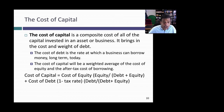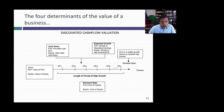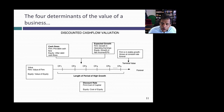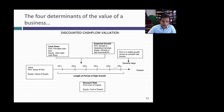The cash flow to the firm discounted back at the cost of capital gives you the value of the business; subtract out debt and you get the value of equity. Stepping back from both the equity and firm valuation models, you can already see the drivers of value: cash flows, the expected growth in those cash flows, a discount rate, and a way of putting closure on the valuation. In a publicly traded company, cash flows can go on forever — that's what a terminal value does: it lets you stop estimating cash flows period by period and use a perpetual growth model, as we did with Con Ed, to get a value at the end of the period.